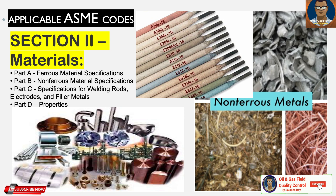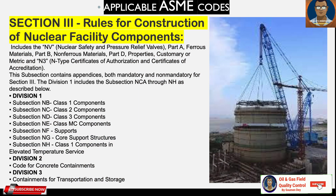Section 2 is for the Materials. It has four parts: Part A is for ferrous material specifications, Part B for non-ferrous material specifications, Part C is for welding consumables — welding rods, electrodes, and filler metals — and Part D is for properties.